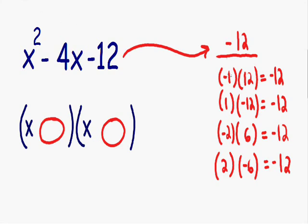Notice our first set of numbers. We have negative 1 plus 12, which gives us a positive 11. Our second set of numbers is 1 plus negative 12, which is negative 11.